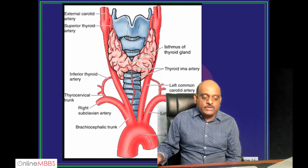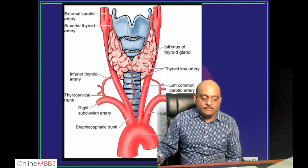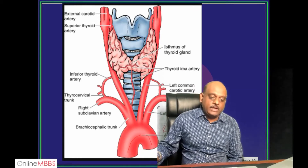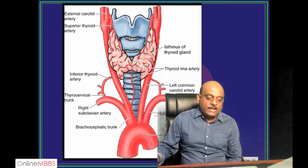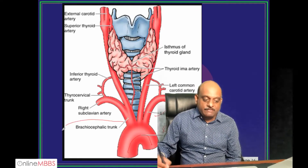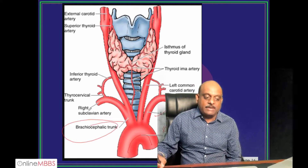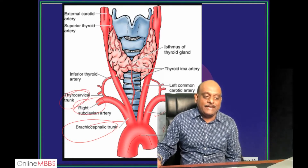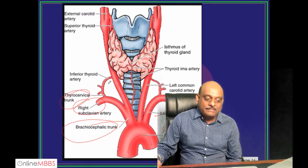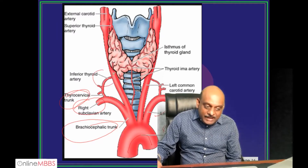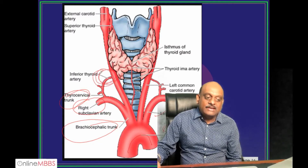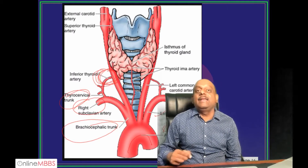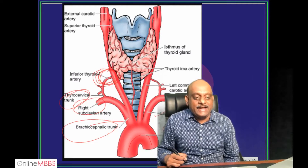If you take the arch of aorta, the left subclavian is coming from it, the brachiocephalic trunk is coming, from that the right subclavian is coming, from that the thyrocervical trunk is coming, and from that you are getting the inferior thyroid artery.